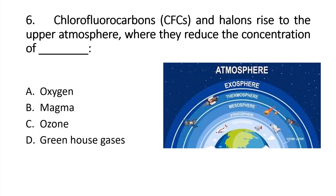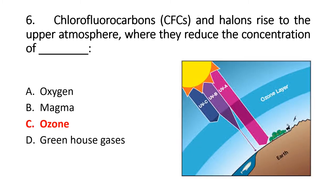Question 6: Chlorofluorocarbons (CFCs) and halons rise to the upper atmosphere, where they reduce the concentration of... The right option is C: Ozone. We know that ozone is basically in the stratosphere layer, at a distance of 10 to 50 kilometers. The main purpose of the ozone layer is to block UV radiation from the sun. This is the ozone layer, O3. CFCs react with O3 to produce O2. This is how the ozone layer is gradually thinning.